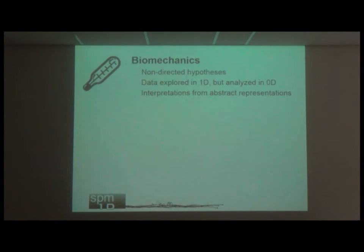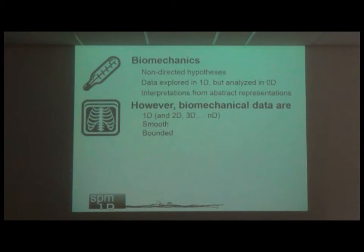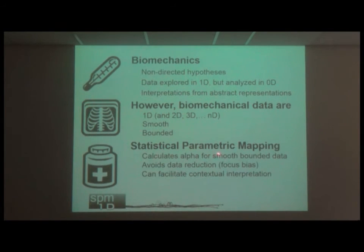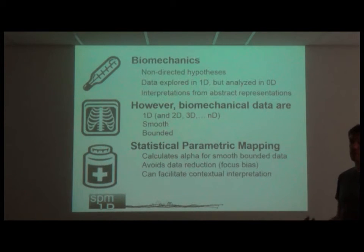To summarize the basic principles before moving to examples: we tend to have non-directed hypotheses, we explore data in 1D but analyze in 0D, and we often have interpretations from very abstract representations. What we really have is 1D, 2D, 3D, or n-dimensional data that is smooth and bounded. The solution is that we can calculate an alpha for smooth bounded data — this is the essential difference. We can therefore avoid data reduction, avoid focus bias, and facilitate contextual interpretation of our data.